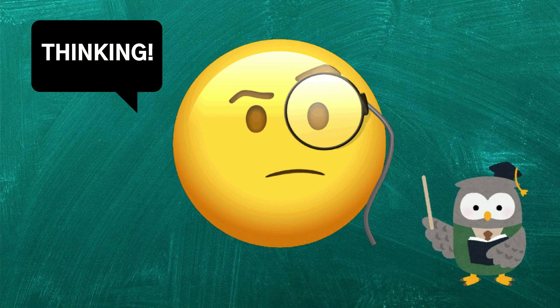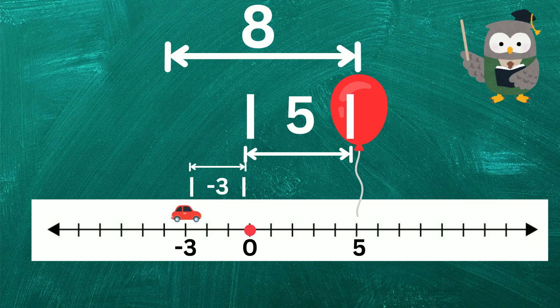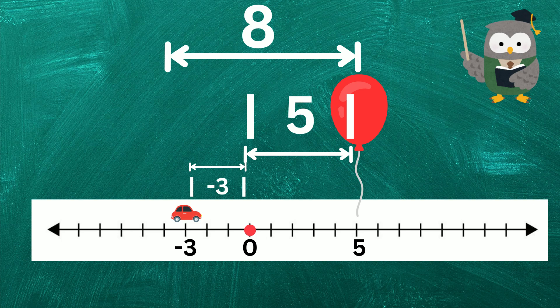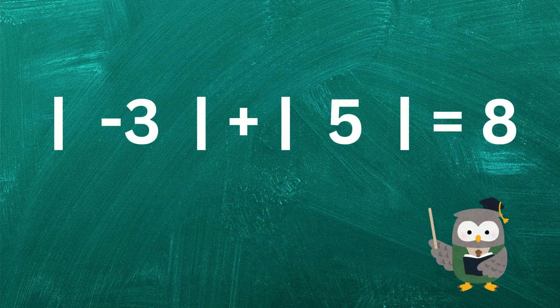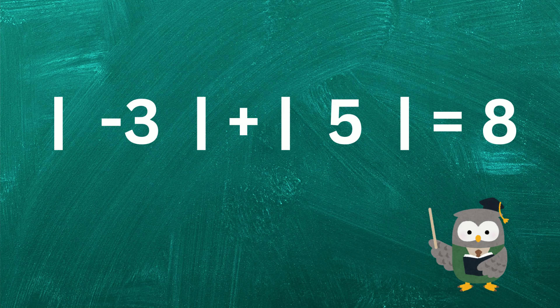Remember, we're talking about distance, so it'll be the absolute value of minus 3 plus the absolute value of 5. That's 3 plus 5, which equals 8.